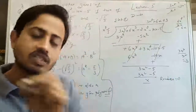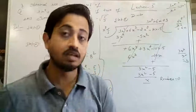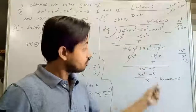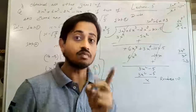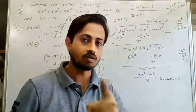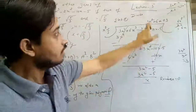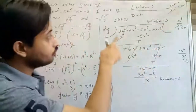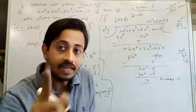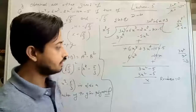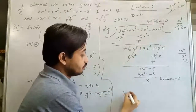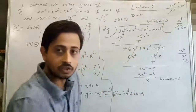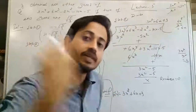If you get remainder 0, your calculation is correct. If you get some remainder, you have made a wrong calculation. Our quotient is 3x² + 6x + 3. We need to factorize this to find the remaining zeros. Taking 3 as common: 3(x² + 2x + 1) = 3(x + 1)². So the factors of 3x² + 6x + 3 are (3x + 3) and (x + 1).